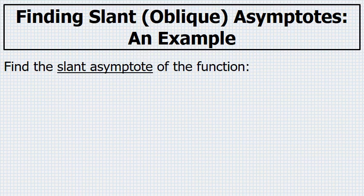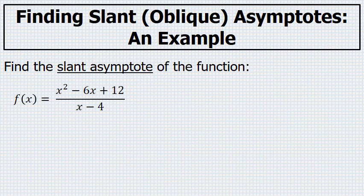Find the slant asymptote of the function f of x equals x squared minus 6x plus 12 all over x minus 4.